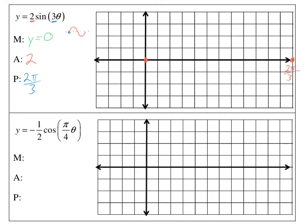If I start here and end here, when do I hit the midline again? Well, you hit exactly in the middle. So exactly in the middle would be pi over 3 — halfway. Now we know the graph is going to go up and back down, and the amplitude is 2. So halfway between the start and middle, aren't we going to go up 2? And halfway between the middle and end, aren't we going to go down 2?